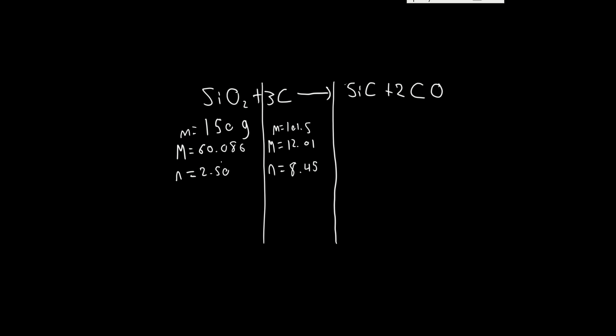If the reaction proceeds as far as it'll go, this is our product of interest. We want to see how much of that we'll get. We want to know which reaction is going to be left over and by how much. So 2.50 moles of this will produce 2.50 moles of this. 8.45 moles of this will produce 8.45 divided by 3 moles of this, if we remember our molar ratio.